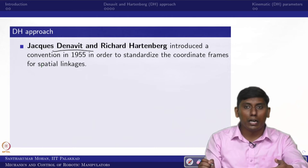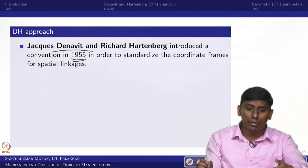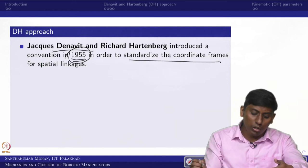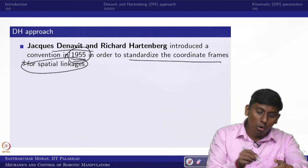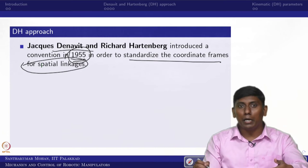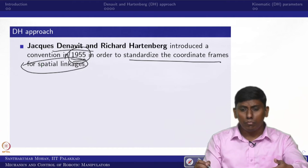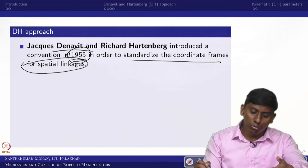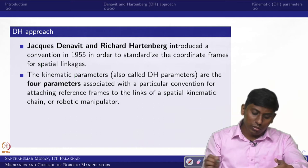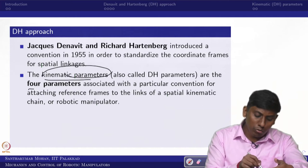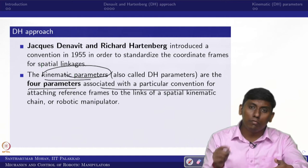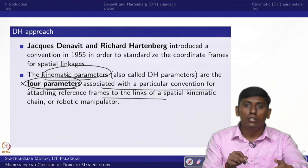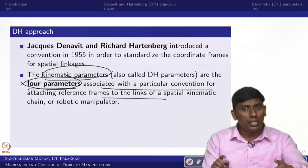One popular simplified method was given by Denavit and Hartenberg, who jointly wrote a paper on kinematic parameters published in 1955, in order to standardize the coordinate frames for spatial linkages. It was not originally intended for serial manipulators — it was mainly intended for spatial linkages and open chains. They said we can use only 4 kinematic parameters instead of 6, but these 4 parameters must be associated with a particular convention.